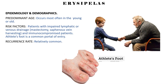Epidemiology and Demographics. Predominant age: occurs most often in the young or old. Risk factors include patients with impaired lymphatic or venous drainage, mastectomy, saphenous vein harvesting, and immunocompromised patients. Athlete's foot is a common portal of entry. Recurrence rate is relatively common.